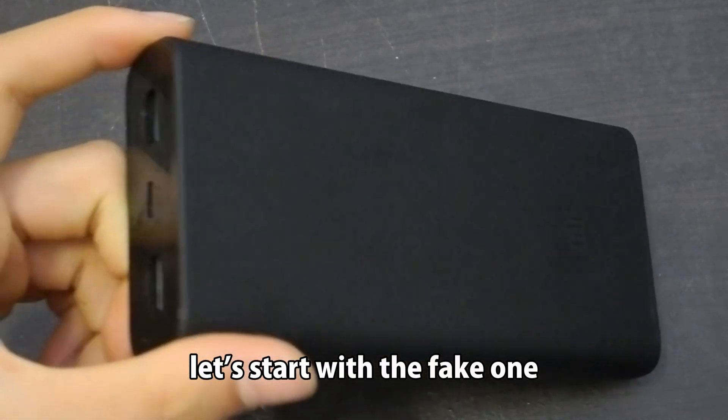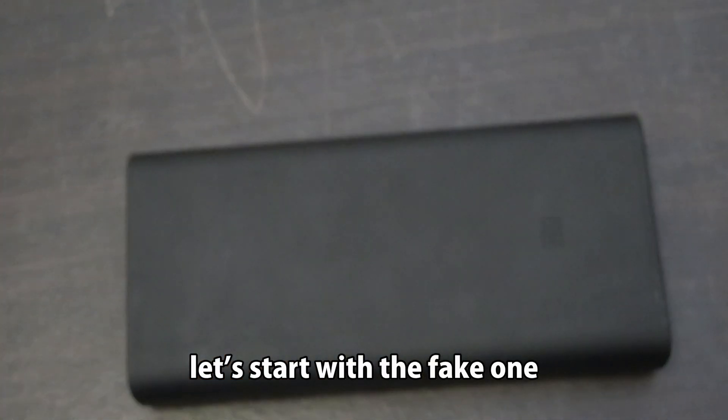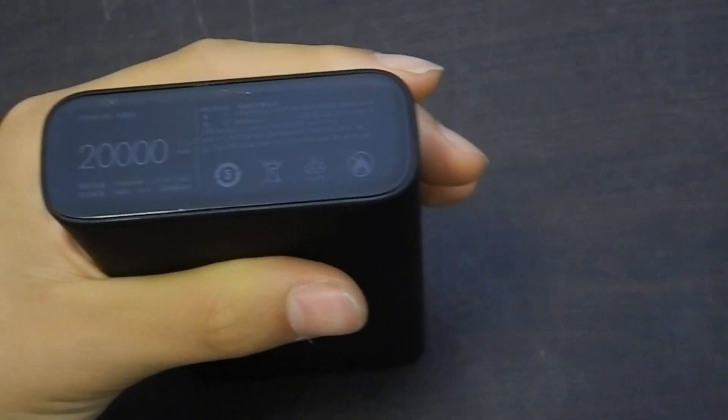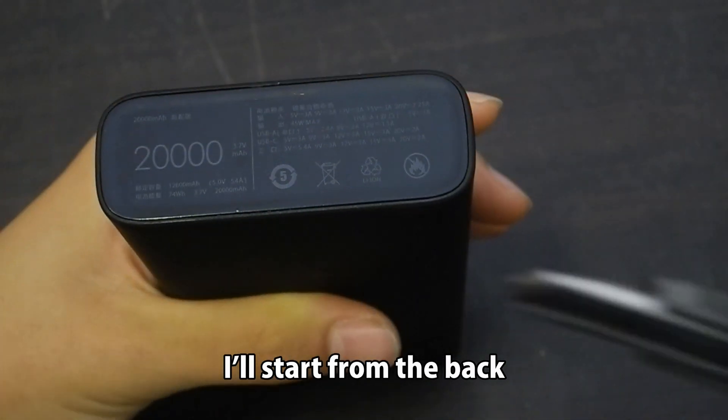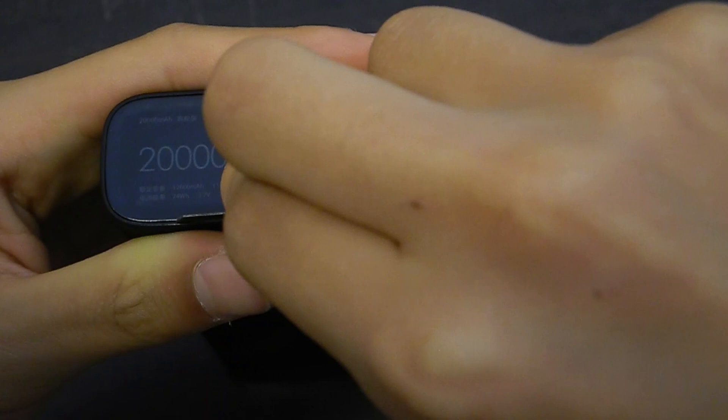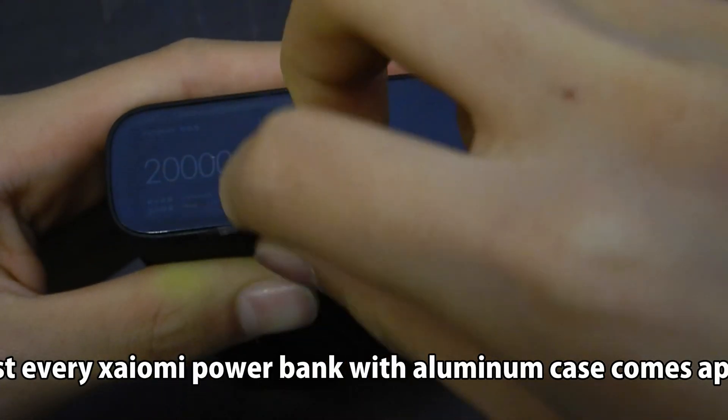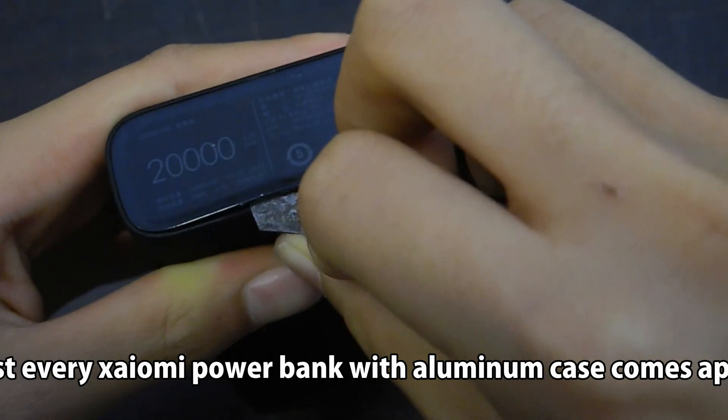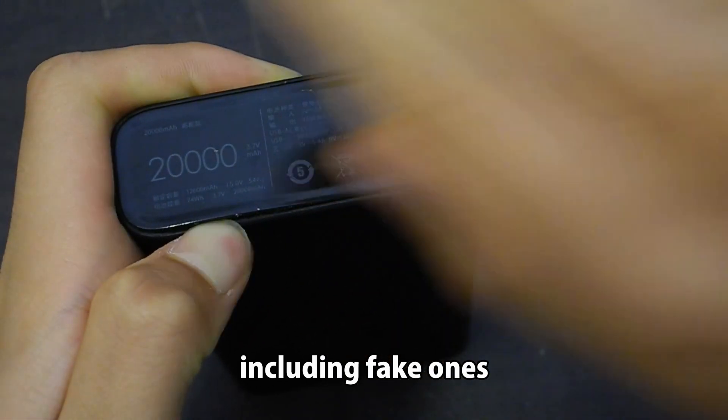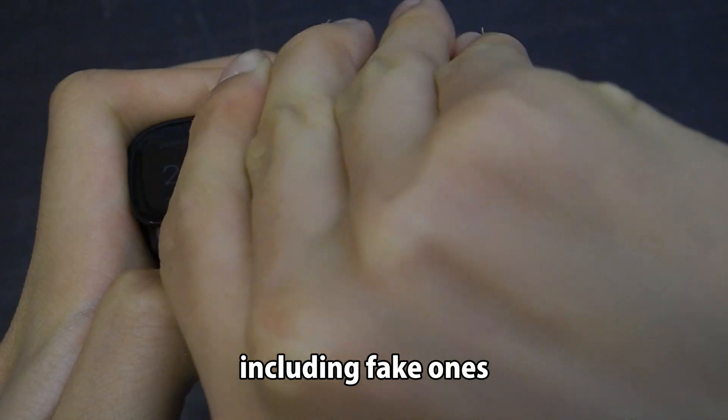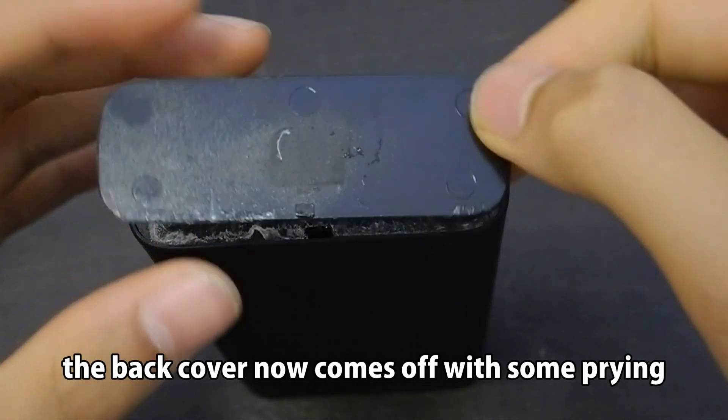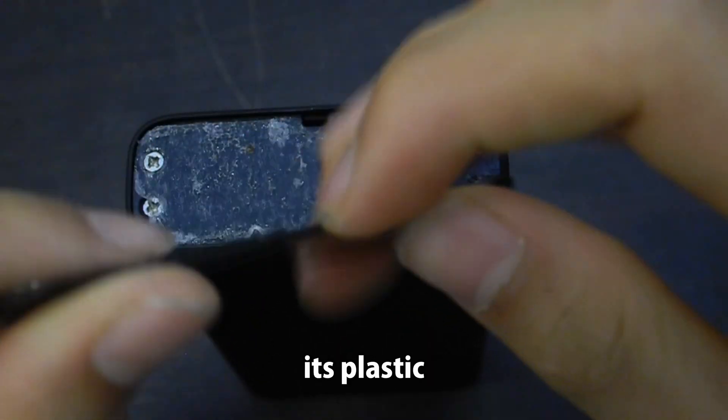Let's start with the fake one. I'll start from the back. Because almost every Xiaomi power bank with aluminum case comes apart from there. Including fake ones. The back cover now comes off with some prying. It's plastic.